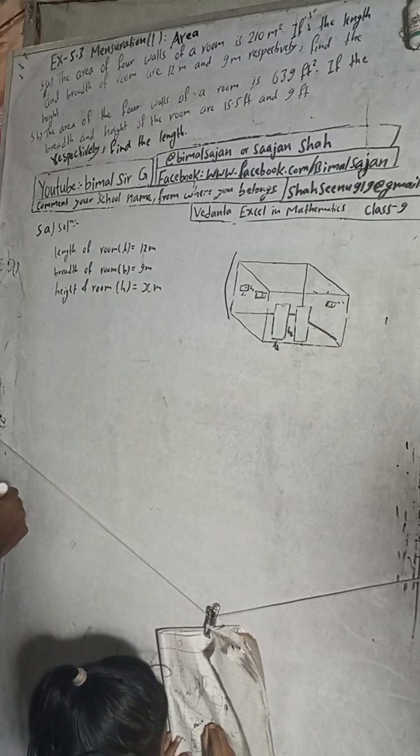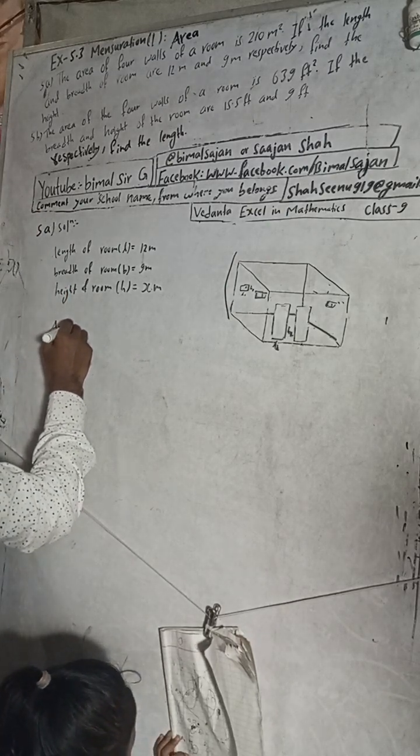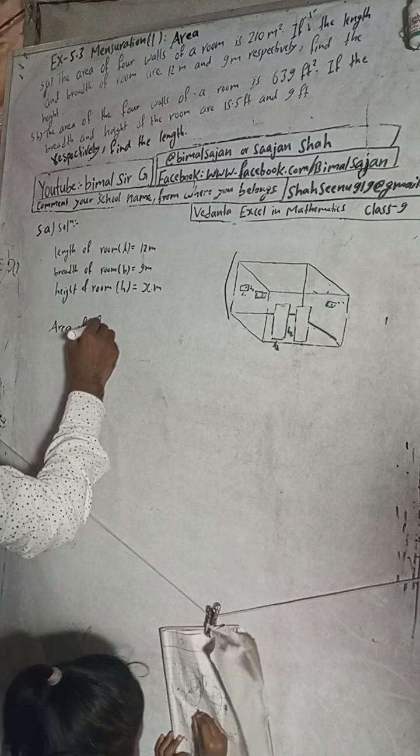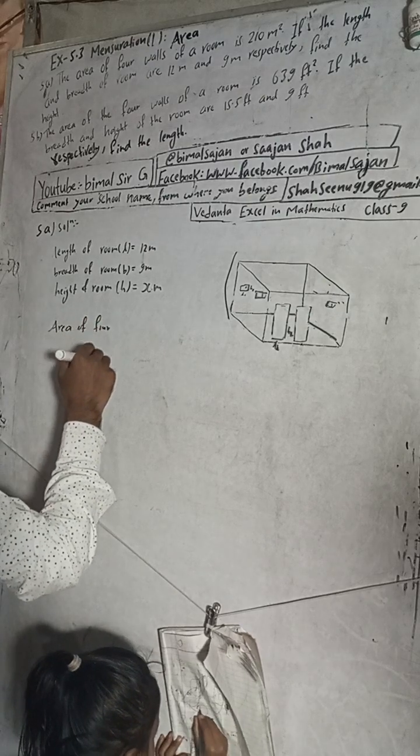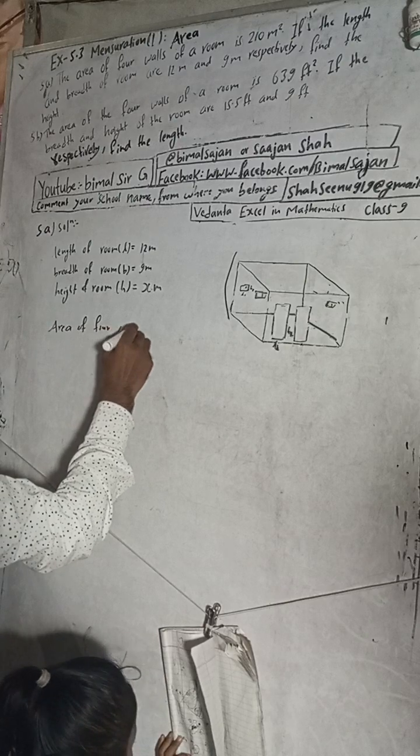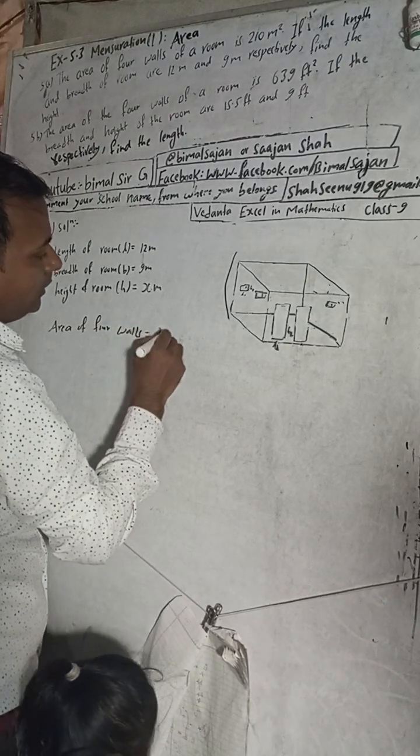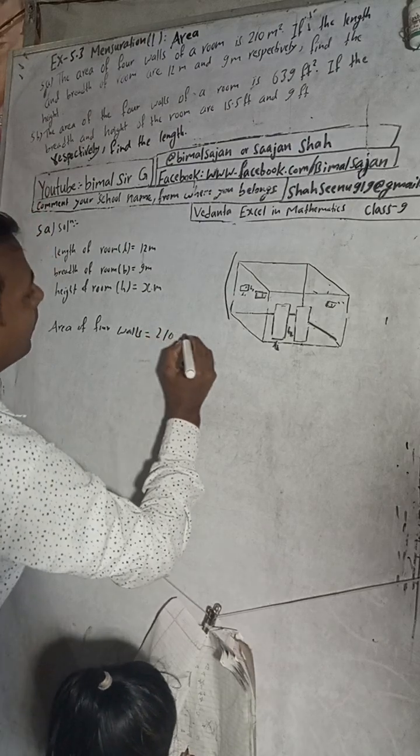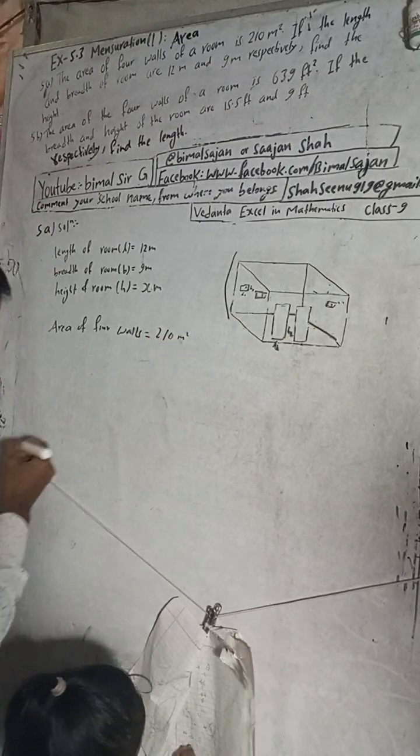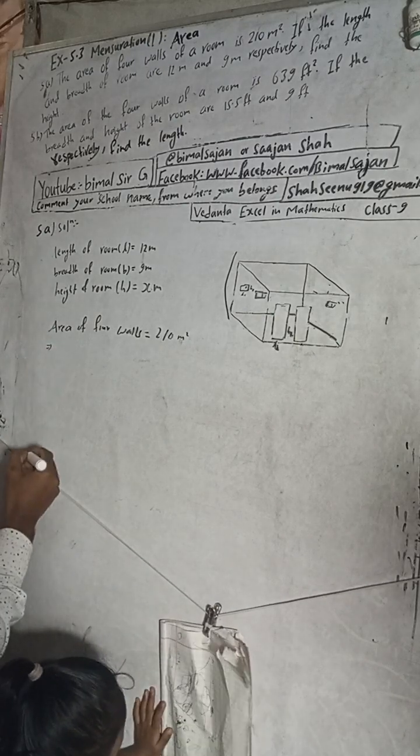Now given: area of four walls. Area of four walls is equal to 210 meter square. Let's use the area of four walls formula.